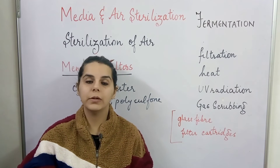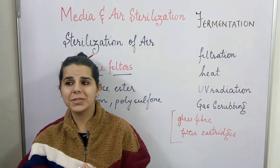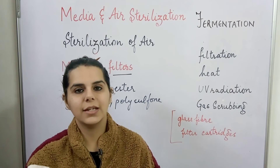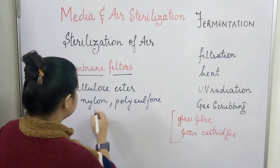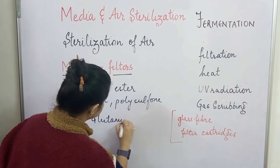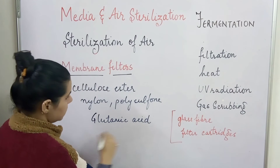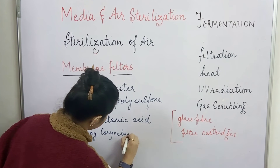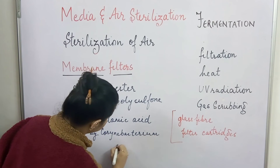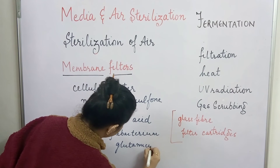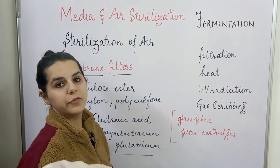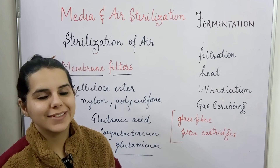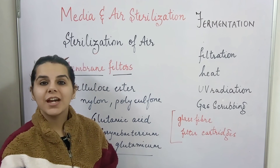One major problem with air sterilization is that there are no filters that can effectively filter out bacteriophages. Bacteriophages have the ability to disrupt industrial fermentation. For example, in glutamic acid fermentation by Corynebacterium glutamicum, there are chances of bacteriophages interrupting and destroying the industrial fermentation process.